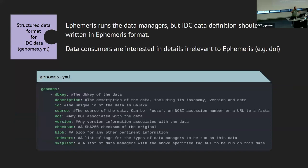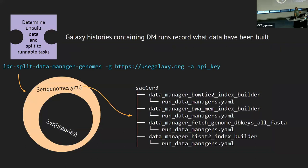First, we had to define what data needed to go into this repository. We needed something beyond just telling Ephemeris how to run data managers — humans want to know things like the DOI associated with this data, where it came from, what's the source, which indexers should be run on it. So Simon came up with a format for genomes.yaml. And so we can define what it is that we actually want to run our data managers on.